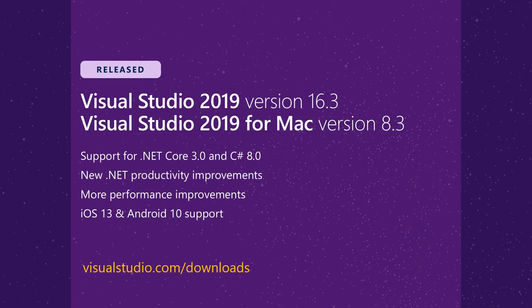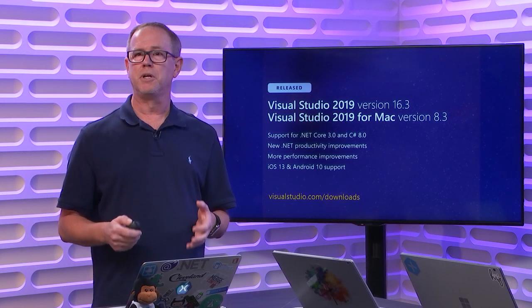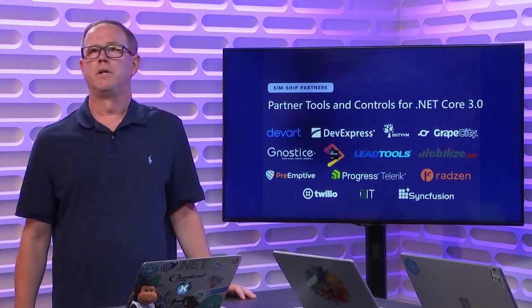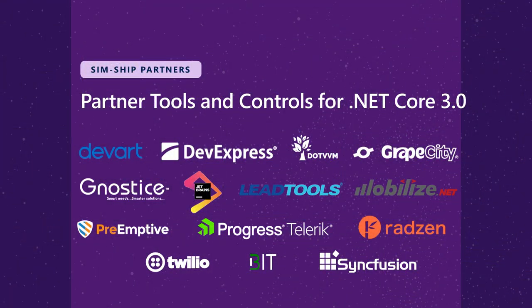Visual Studio 2019 16.3 just shipped, along with Visual Studio 2019 for Mac 8.3. Both versions support .NET Core 3 and C# 8. They have a ton of productivity and performance improvements. If you're a mobile developer, they support iOS 13 and Android 10. A bunch of our partners have also released brand new tools today for .NET Core 3 — if you're going to use Blazor, there are controls from DevExpress, Telerik, and more available today.